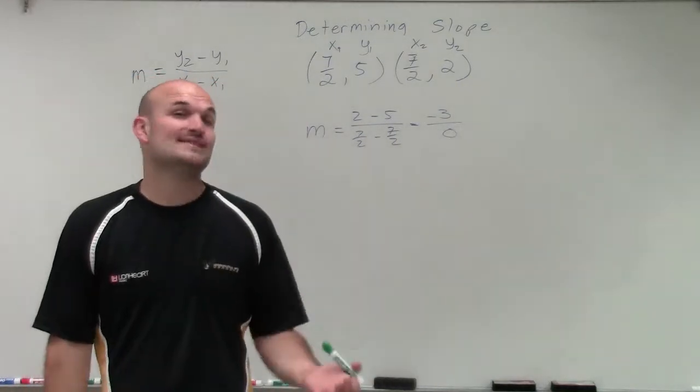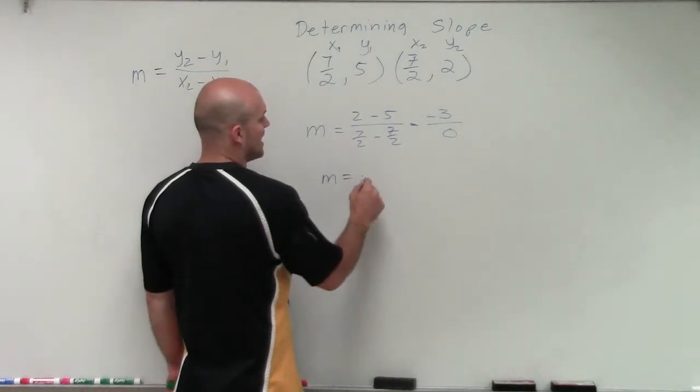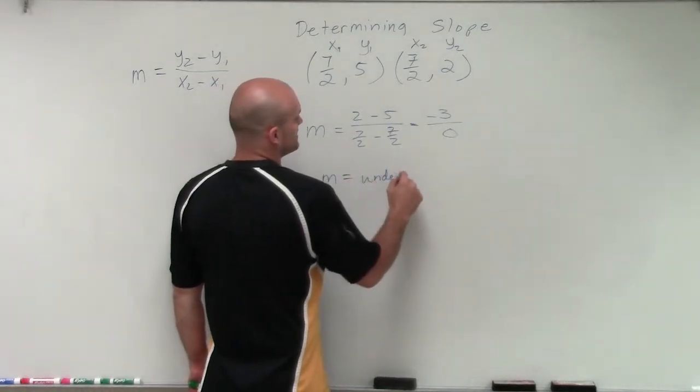So what we see is we have a 0 in the denominator, which means our slope, which we'll represent as m, is going to be undefined.